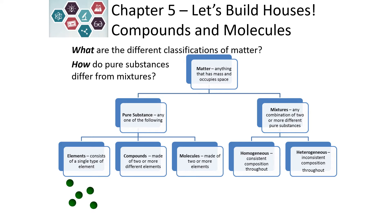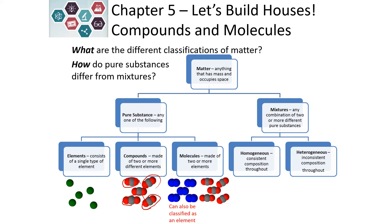Let's look at some examples and the ways that we can tell. If we have just one atom with no connections between them, we know that it is an element. We also know it's an element if we can find it on the periodic table. For compounds, notice how it is the same thing over and over — it is a pure substance because it is the same type of compound repeated. Molecules are two or more elements, so it could be an element attached to itself. This example would be N2: two nitrogen atoms attached to each other, making it a molecule, but also an element because it's just nitrogen.